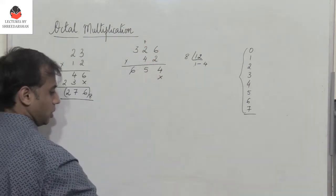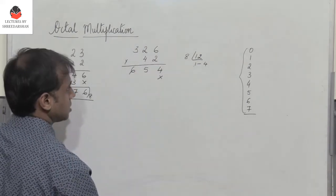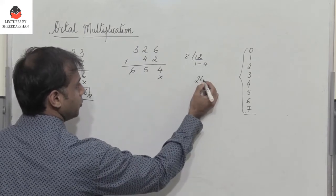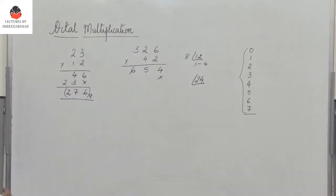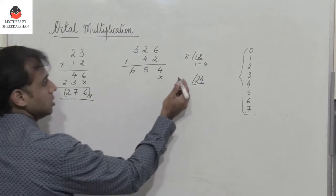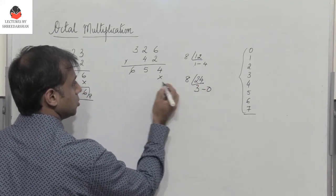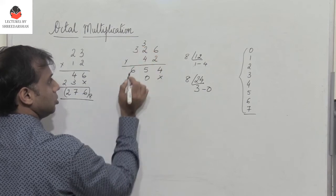Next, so then you have 4 into 6. So 6 4s are 24. So what do you do? I have to convert this to octal, isn't it? So when I divide this by 8, I get 30. So 0 and you write 3 here.